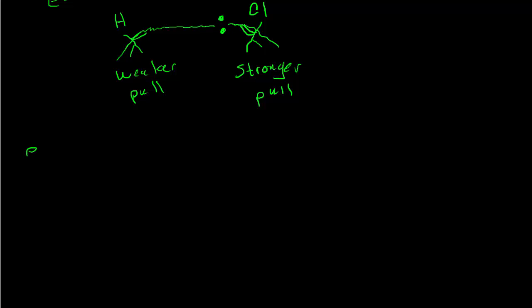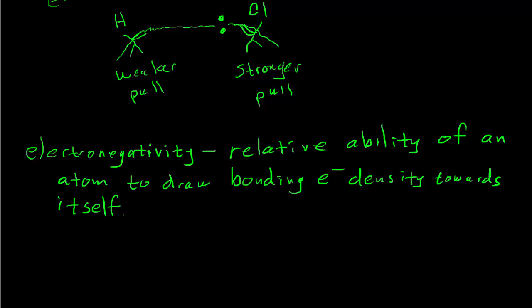That's what electronegativity is all about. By definition, electronegativity is the relative ability — or relative strength — of an atom to draw bonding electron density towards itself. So we want to compare how much stronger chlorine is than hydrogen, and associate a number with that.